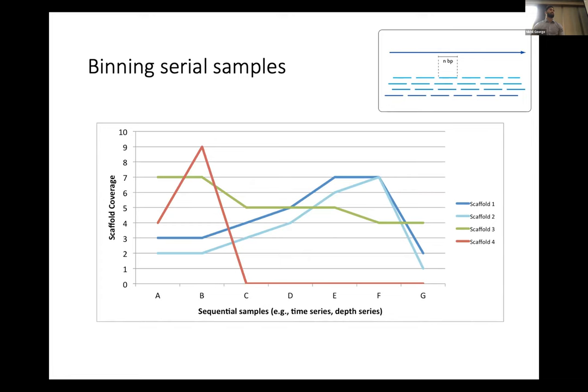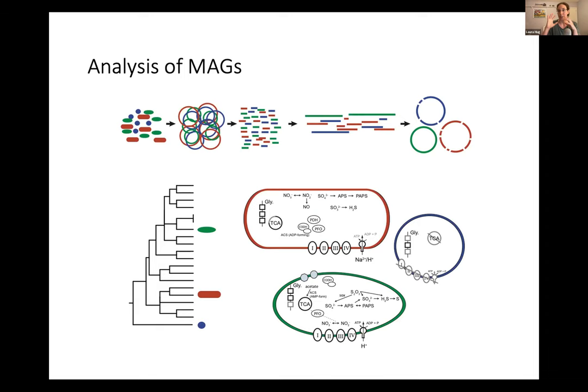So we're moving on. We have our MAGs, we've assembled our data, we've binned it however we chose with whatever information we had. This is a computationally intensive process. You saw yesterday how it's pretty easy to take your reads and just get a sense of who's there and what the functions are. The advantage of having MAGs is that you can then start to look at an individual organism's contribution to the system: you can place them much more robustly taxonomically and identify novel things that aren't really in the databases.